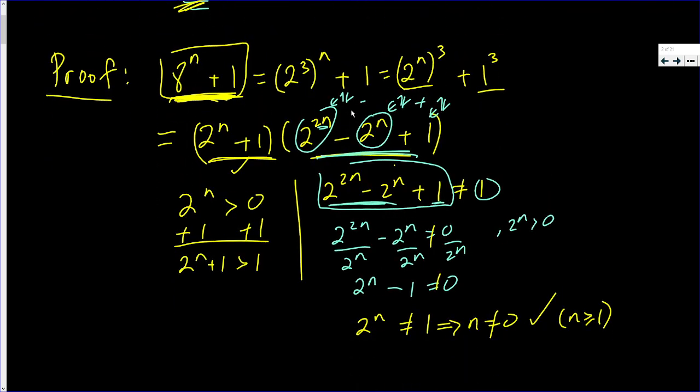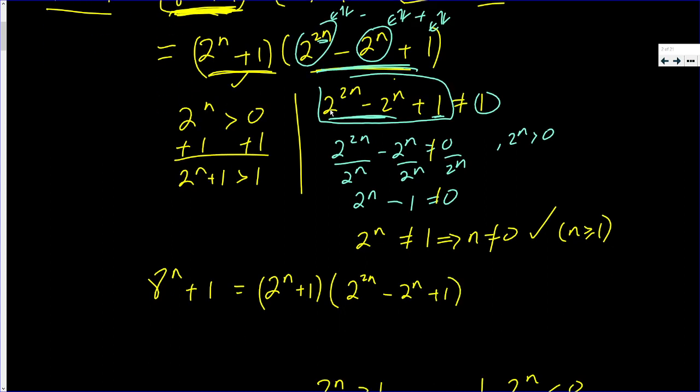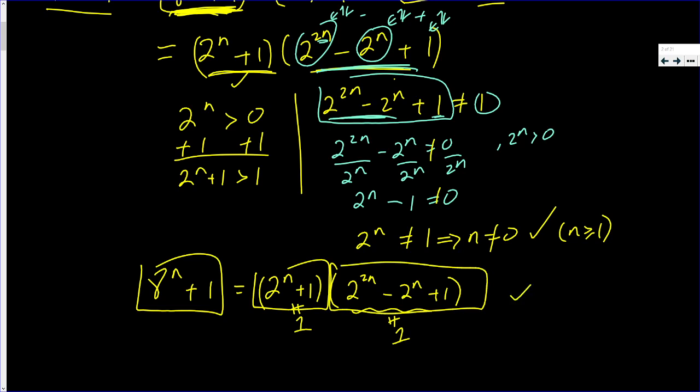Let's recap. 8^n + 1 = (2^n + 1)(2^(2n) - 2^n + 1). Although these are both integers, this one is not equal to 1 if n ≥ 1, and this one is not equal to 1 if n ≥ 1. So I wrote this as a product of two integers where neither is 1. That means 8^n + 1 is composite.